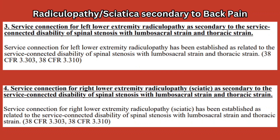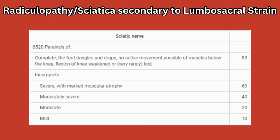Radiculopathy, secondary to back pain or sciatica, secondary to lumbar sacral strain. You can get service-connected for each individual lower extremity, anywhere from 10% to 80% depending on your level of severity. Looking at this example, this veteran was service-connected at 10% per leg. If you have 10% for your low back pain — lumbar sacral strain, thoracic strain — and you put in a claim for two secondaries, that's two additional 10% to 80% ratings per leg that the VA is going to add on top of your already service-connected low back pain.